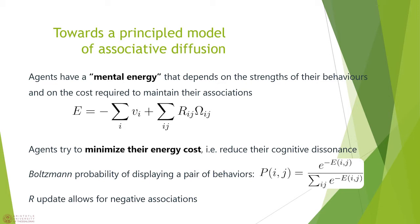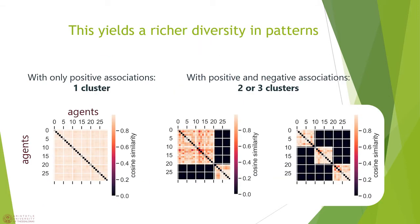We asked if associative diffusion drives polarization. The model says yes, but we found this is solely due to the constraint implementation. We definitely suggest that we need another framework that allows for negative associations more explicitly. As a further extension, we propose an energy-based model where agents have a certain mental energy that considers the mental cost of having certain behaviors and certain associations. In this framework, we formulate the cognitive dissonance reduction constraint as an energy minimization problem. This also gives us a consistent way of computing the probability of displaying a pair of behaviors by using Boltzmann weights. Preliminary simulations yield a much richer diversity of patterns, including one, two, or three clusters, and we do not necessarily get the two-cluster polarization of Goldberg and Stein.